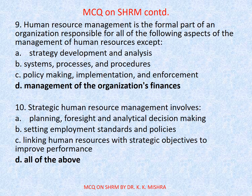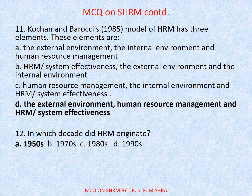Question number 10. Strategic human resource management involves options A. Planning, foresight and analytical decision making. B. Setting employment standards and policies. C. Linking human resources with strategic objectives to improve performance. D. All of the above. Correct option is D. All of the above. By and large, the correct options will be highlighted, but wherever there is a difference in correct option, I will speak it out. This is why I am giving a narration to this particular video tutorial.